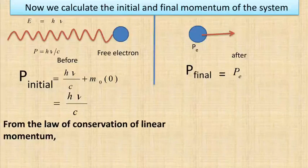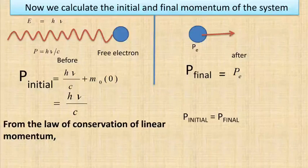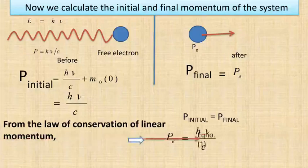According to the law of conservation of linear momentum, the total momentum of an isolated system remains conserved, meaning initial momentum equals final momentum. So p_initial = p_final, which implies p_e = hν/c. We call this equation number 1.